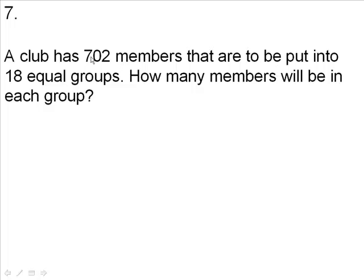Number 7. A club has 702 members that are to be put into 18 equal groups. How many members will be in each group?